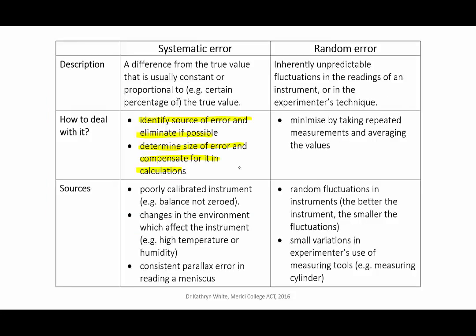Happily, random error can be minimized by averaging over a number of measurements. If the error is truly random, then averaging over a sufficient number of values will reduce the error to close to zero, because the high values will cancel out the low values.